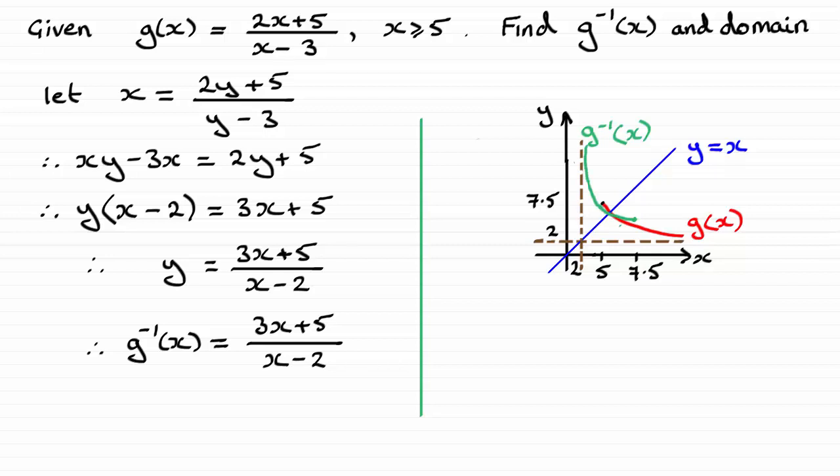So you'll see that the 7.5 that we had here ends here on the green graph of the inverse of g of x, and it approaches this asymptote here.